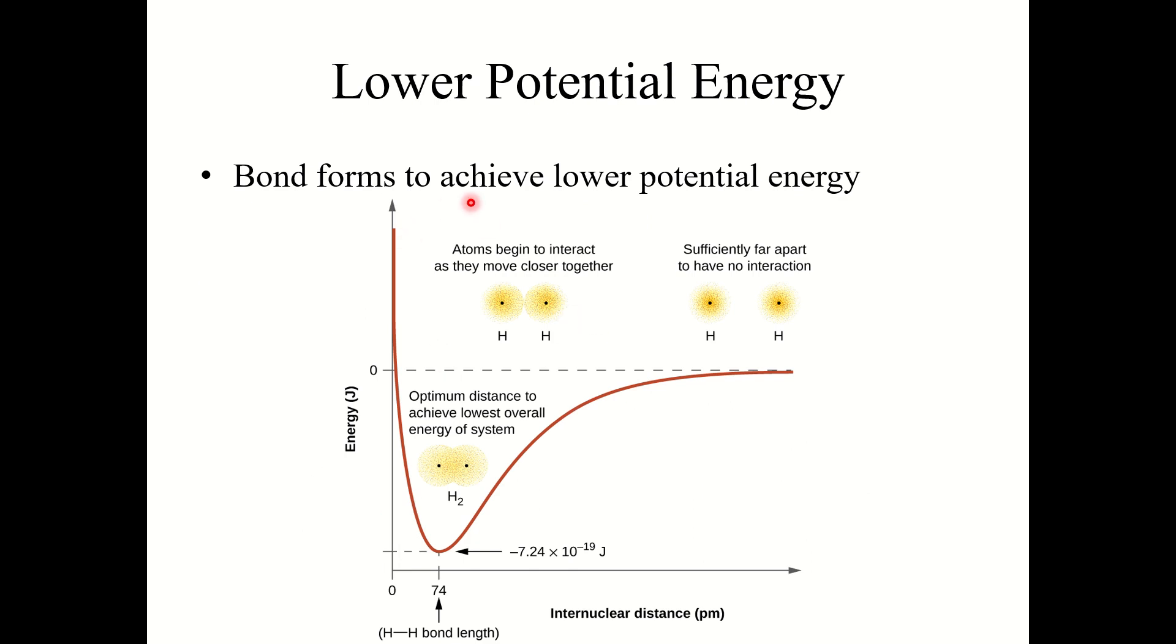Now bonds form to achieve a lower potential energy. The atoms are always trying to get to the most stable or the lowest energy state. For example, here with hydrogen gas, H2, hydrogen gas's bond length is around 74 picometers. The reason for this is because this bond distance minimizes or achieves the lowest overall energy of the system.